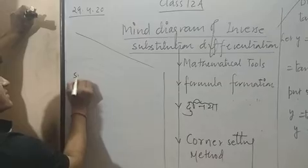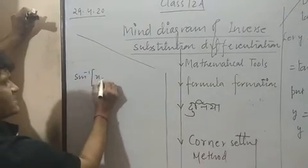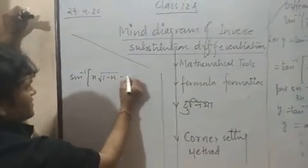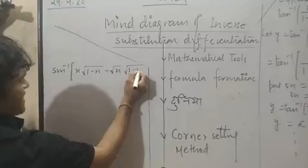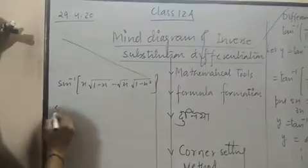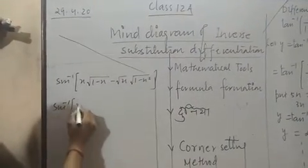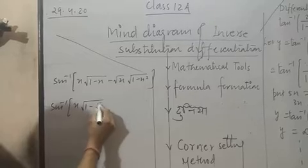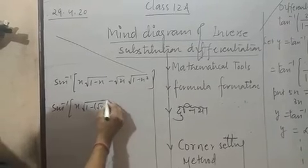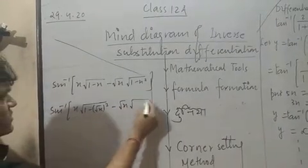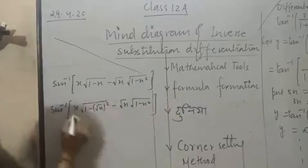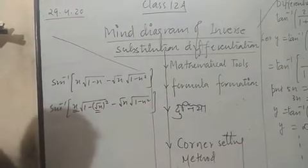Just say, sin inverse, question is x root 1 minus x, minus root x times 1 minus x square. Now what you will do? Sin inverse, x you don't touch. 1 minus x square is equal to root 1 minus x square. Minus root x as such, 1 minus x square. Now, x and root x you substitute.